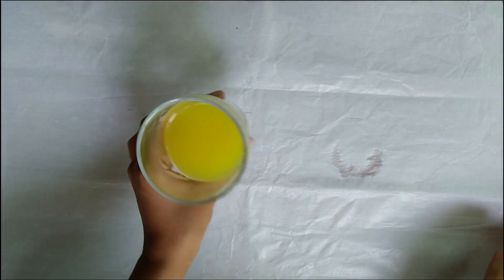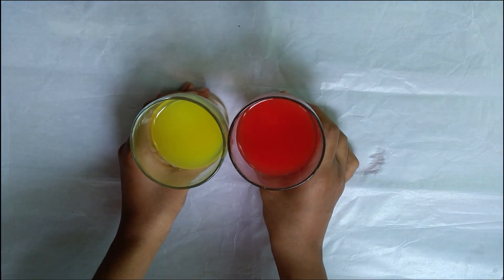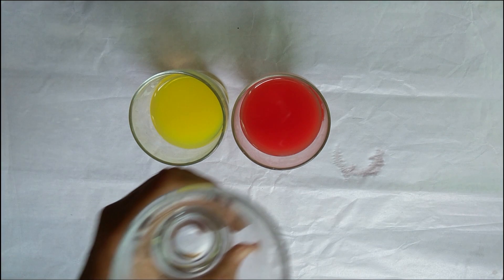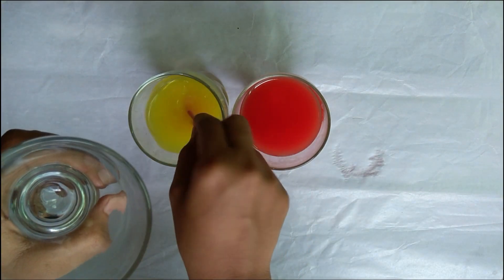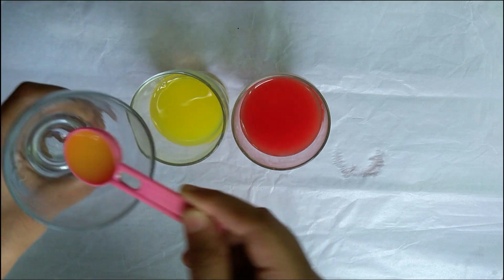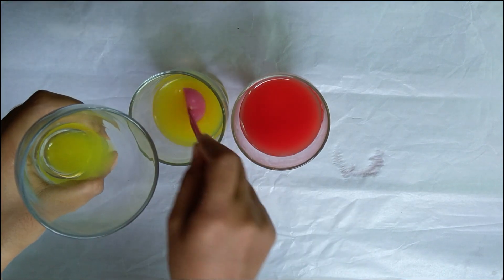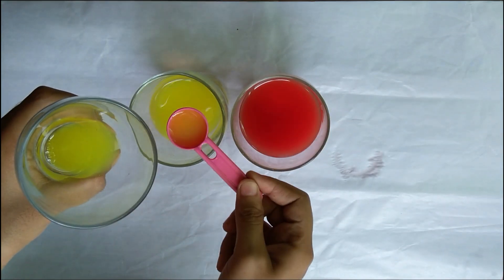Now we shall see what happens when we mix yellow and red color. Four spoons of yellow and four spoons of red and we are going to see what happens with these two colors.